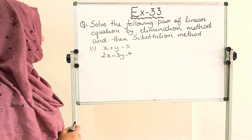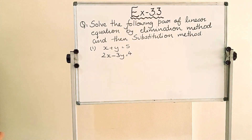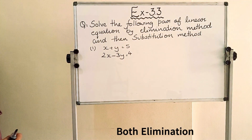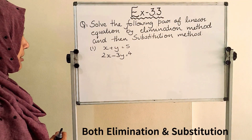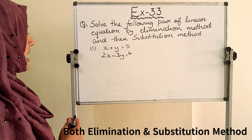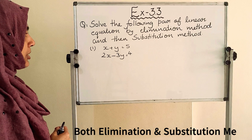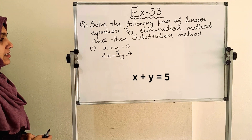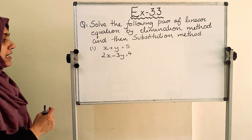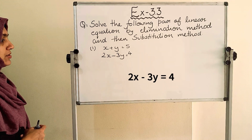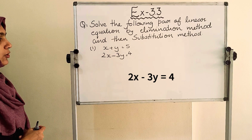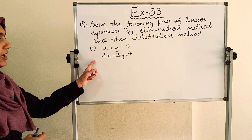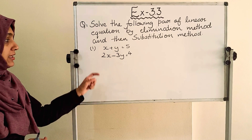First question: solve the following pair of linear equations by elimination method and then substitution method. Roman number 1: x plus y is equal to 5 and 2x minus 3y is equal to 4. These are our equations.